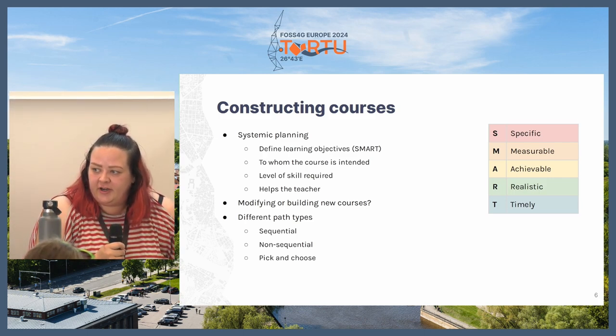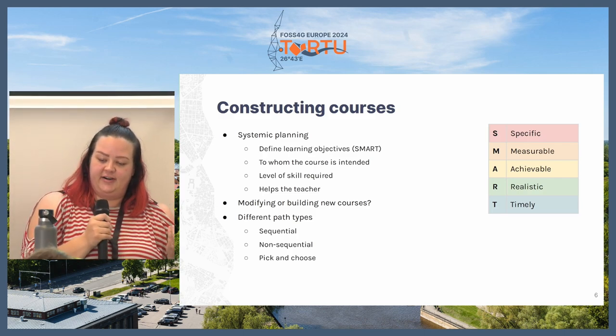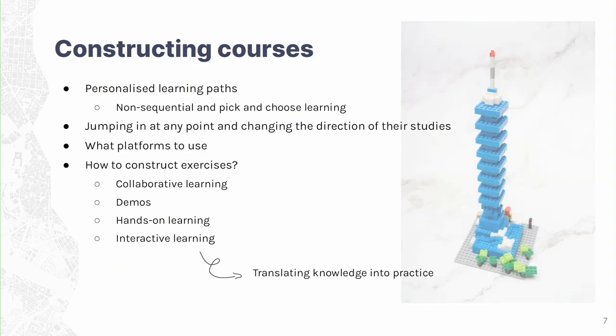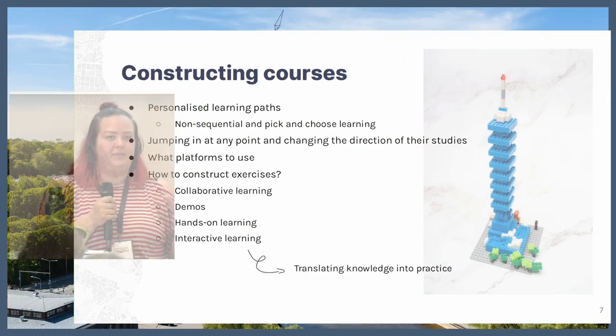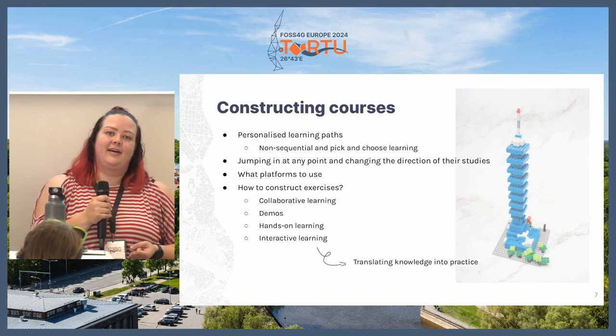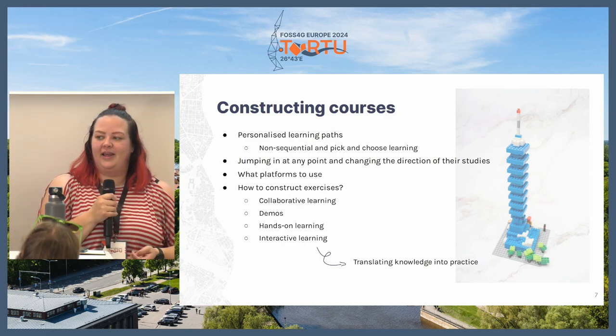The most free option is pick-and-choose learning paths, which are non-sequential courses with usually some minimum number of courses that you need to attend to complete the whole learning path. With non-sequential and pick-and-choose learning paths, there is usually some kind of personalized learning path. With these personalized learning paths, students should be able to jump in at any point and change the direction of their courses if they feel motivated to do something different from what they originally planned.